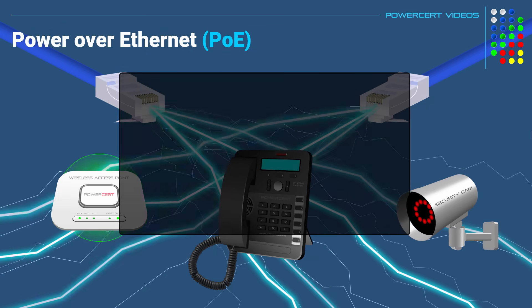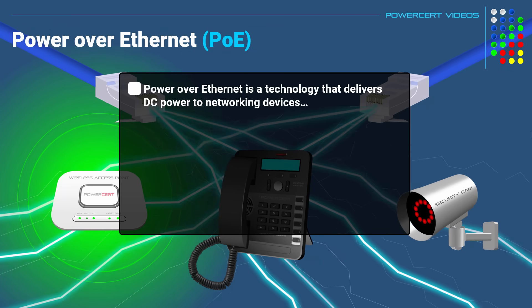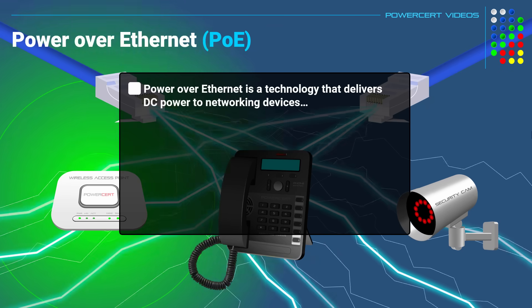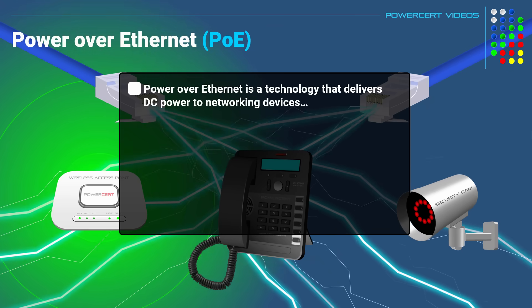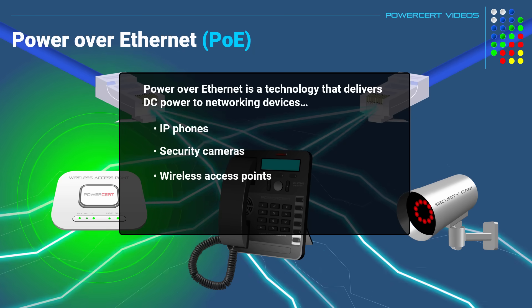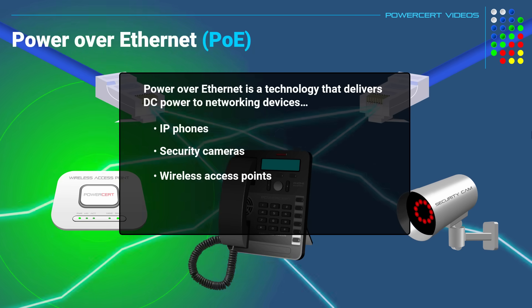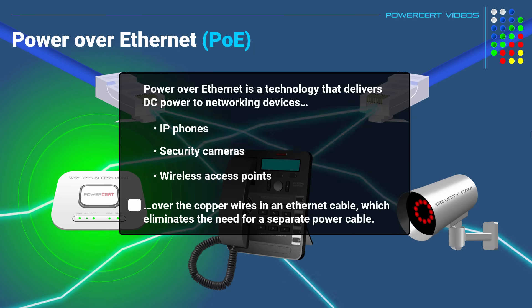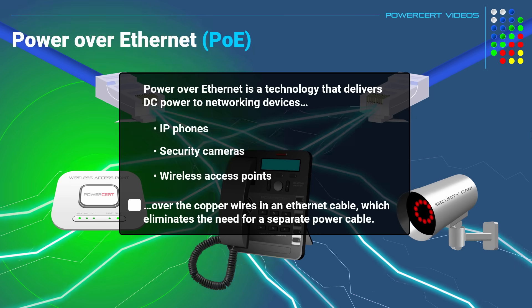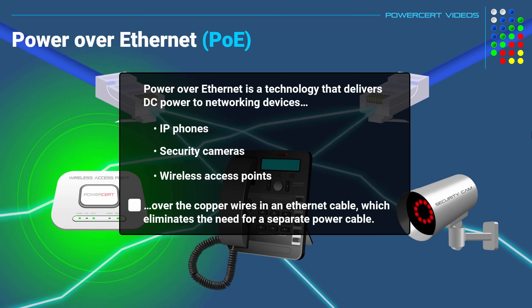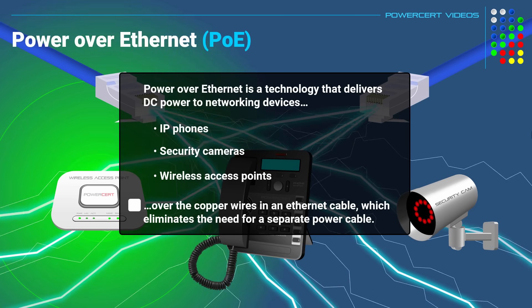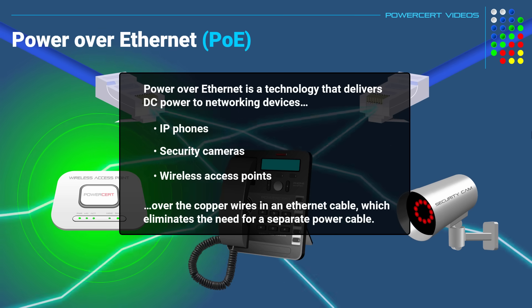Power over ethernet is a technology that delivers DC power to networking devices — such as IP phones, security cameras, and wireless access points — over the copper wires in an ethernet cable, which eliminates the need for a separate power cable.